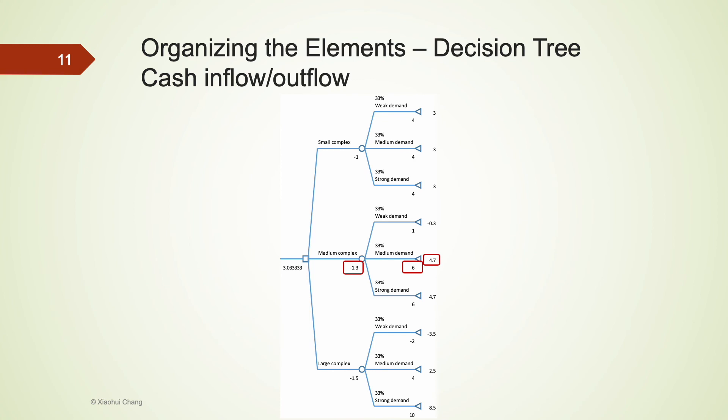Suppose that the company decided to build a medium complex. That is the company follows the middle branch from the decision node on the very left to reach a chance node. There is a cash outflow of $1.3 million. This number should be recorded between the decision node and the chance node.